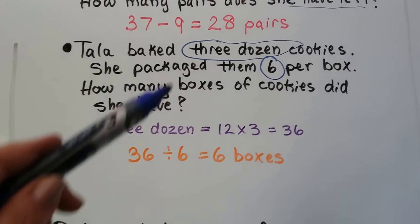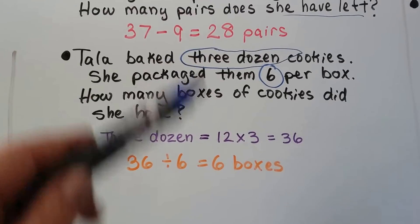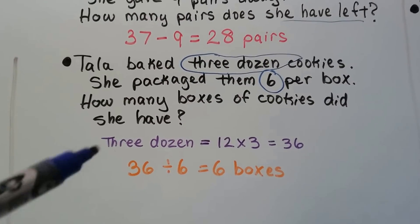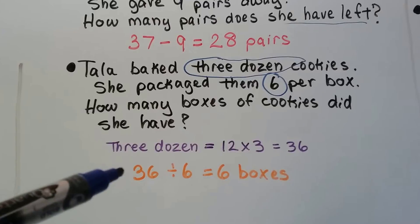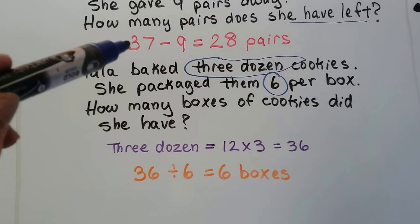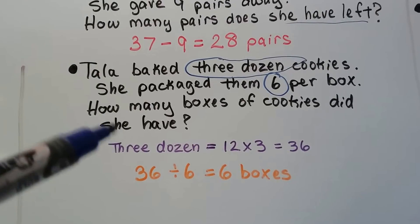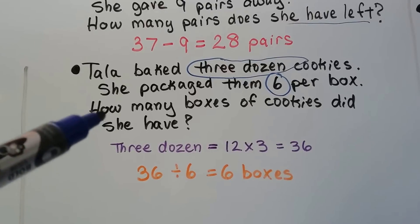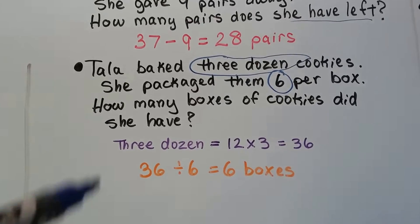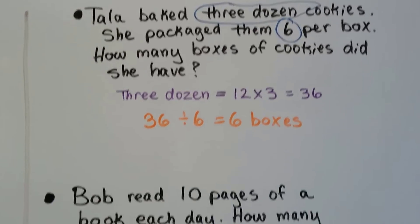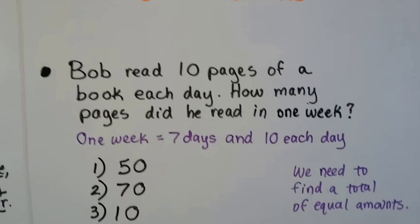Watch out for numbers that are written as words. Remember to put the larger number first as the minuend or put the larger number first as the dividend.